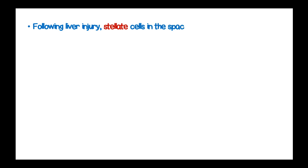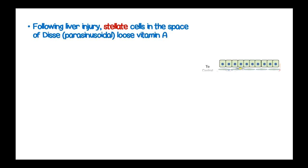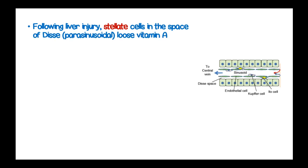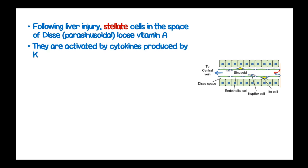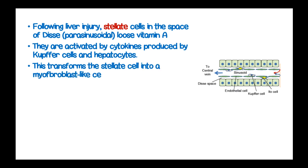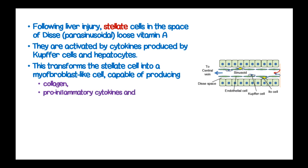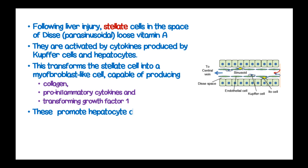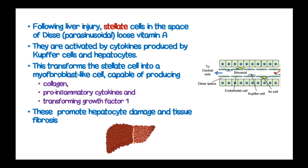Following liver injury, the stellate cells in the perisinusoidal space lose vitamin A. These cells are activated by cytokines produced by Kupffer cells and hepatocytes, making them transform into myofibroblast-like cells capable of producing collagen, pro-inflammatory cytokines, and transforming growth factor 1. These factors promote hepatocyte damage and tissue fibrosis.